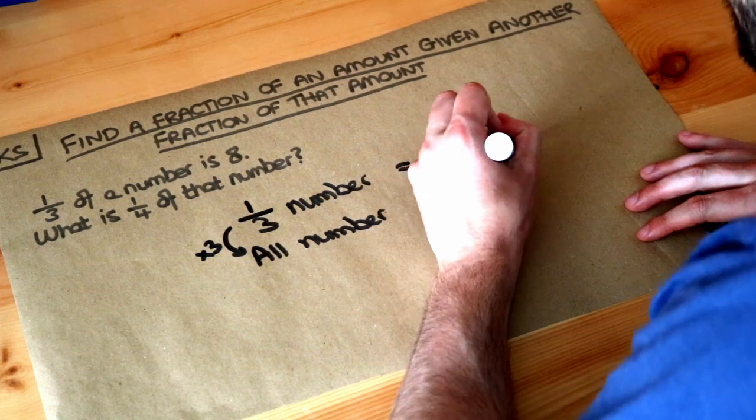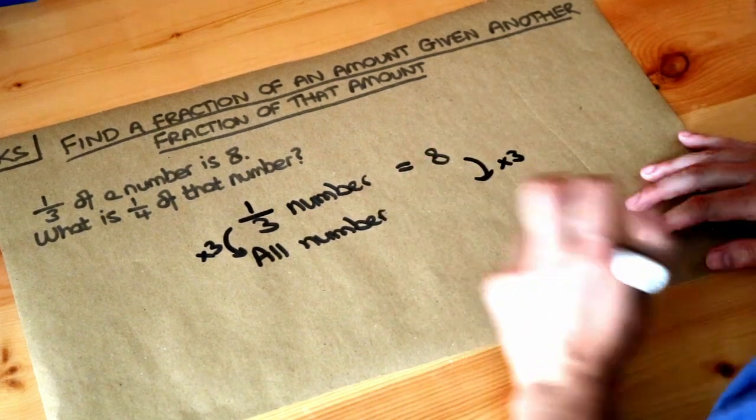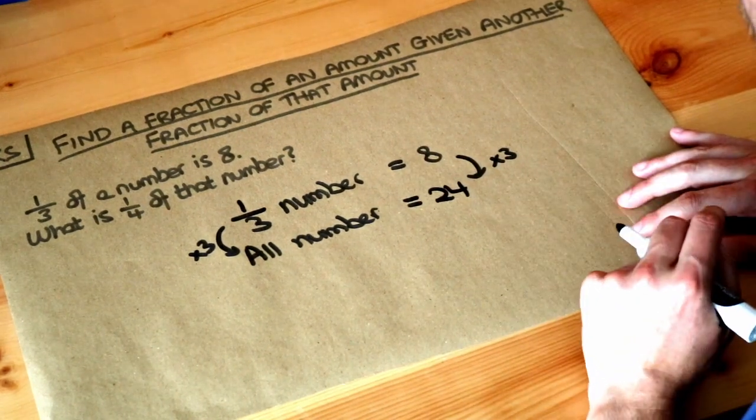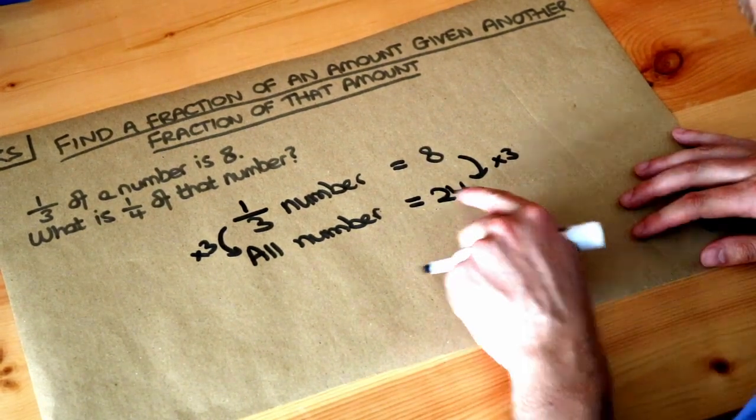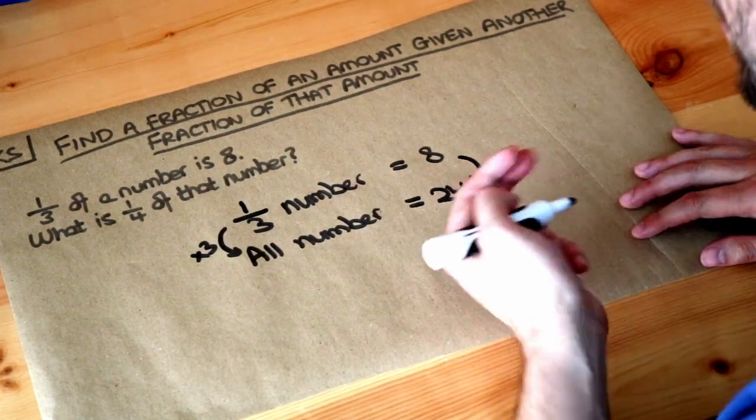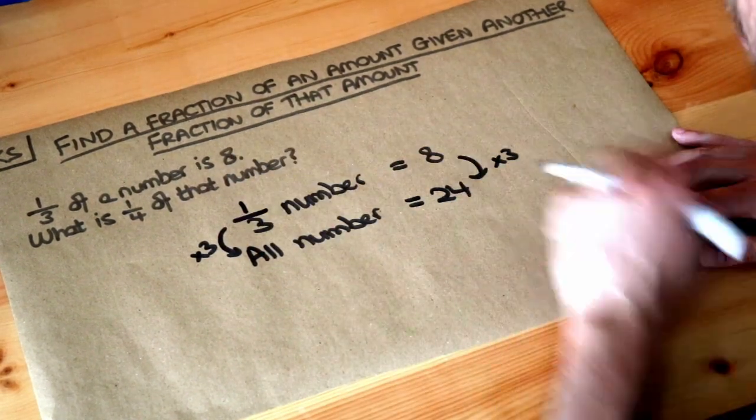And therefore, we also need to make the number here three times bigger. And 8 times 3 is 24. So the original number is 24. Let's check that. If we did a third of 24, a third of 24 is 24 divided by 3, which is 8, which is right.